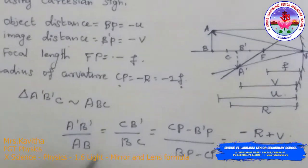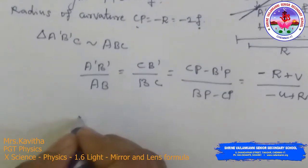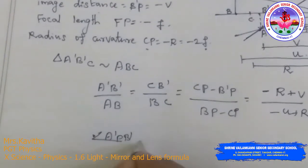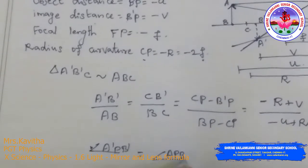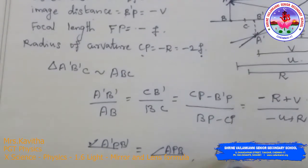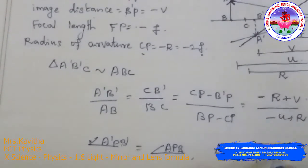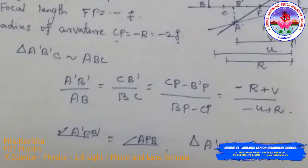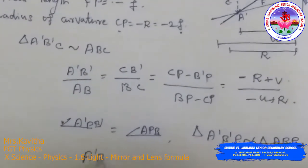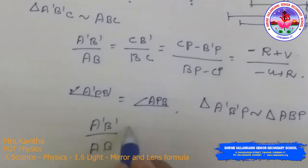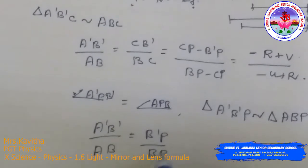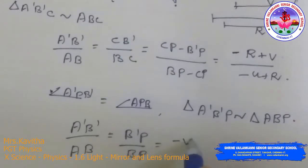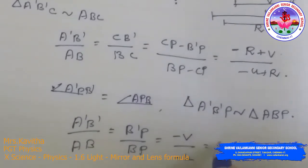Since angle A'PB' equals angle APB (vertically opposite angles), triangles A'B'P and ABP are similar. Therefore A'B'/AB = B'P/BP = −V/−U = V/U.